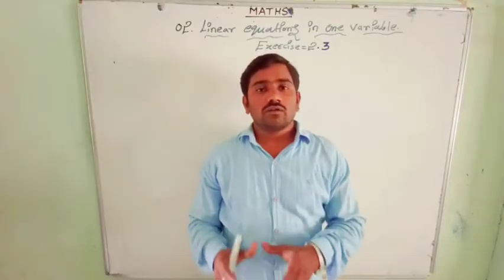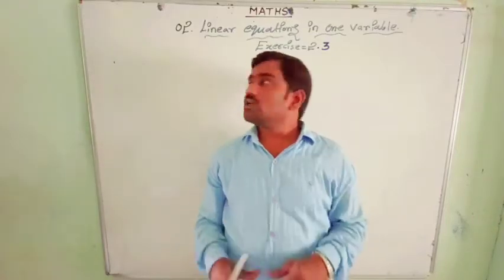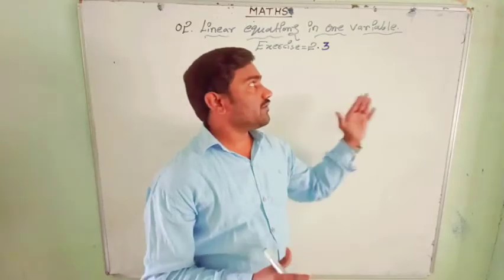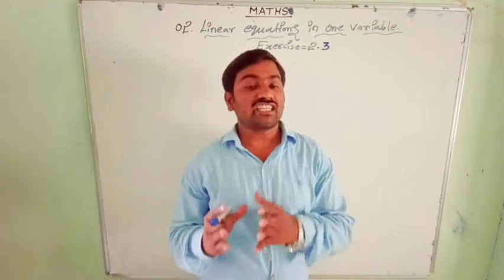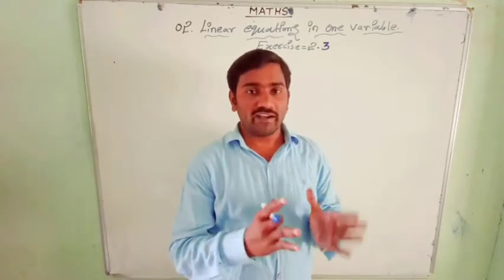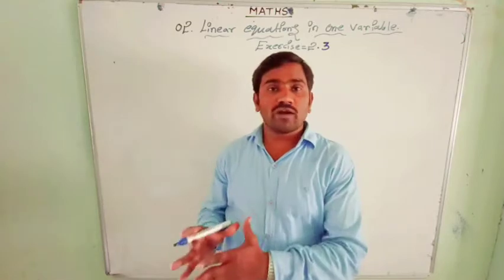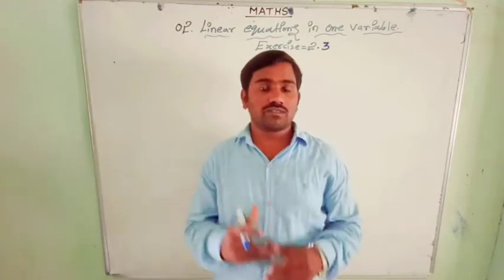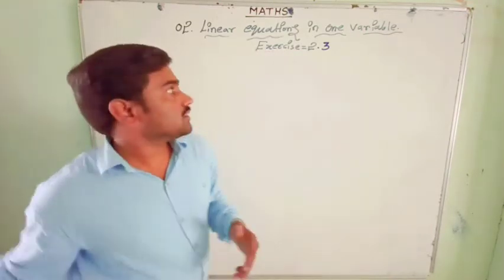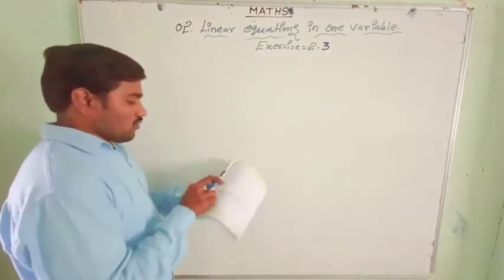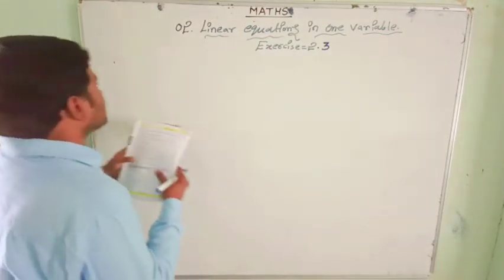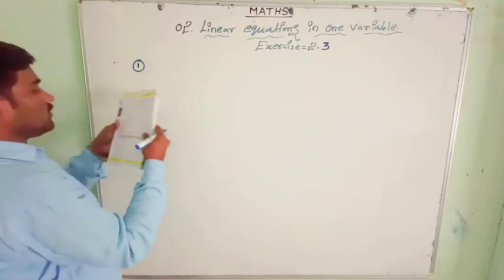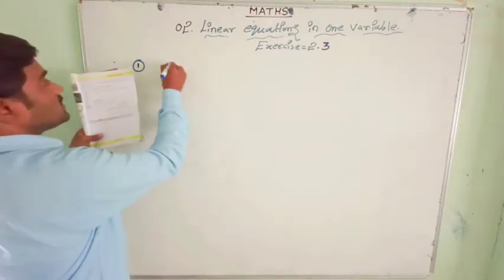Hi children, today we are going to learn 8th class 2nd chapter, linear equations in one variable. In that, exercise number 2.3. Here in 2.3 we have simplification of linear equation problems. So let us start our problems. There are overall 14 problems and I will try to solve all of them.